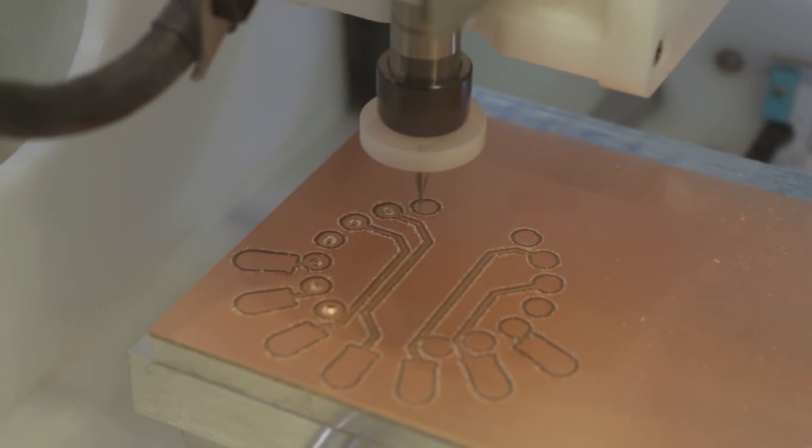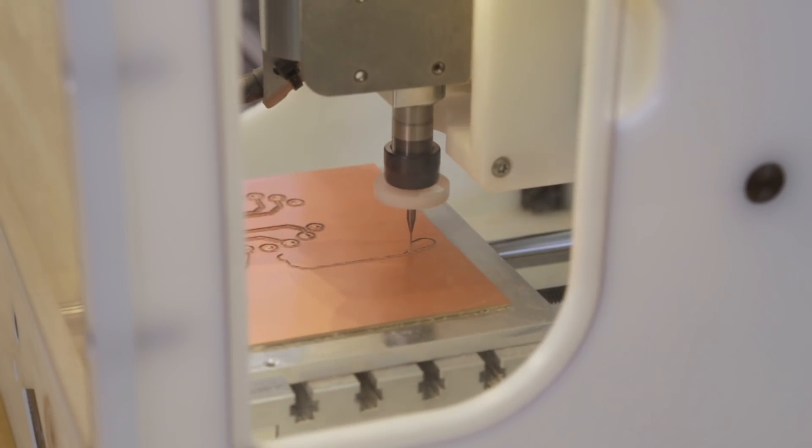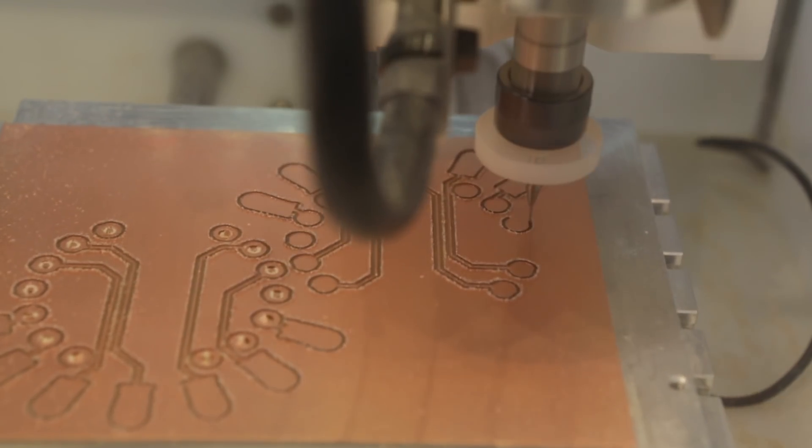This cuts out custom shapes and can make traces by milling away outlines and drilling holes. By using a single tool you can speed up the process and make really fast PCB prototypes.